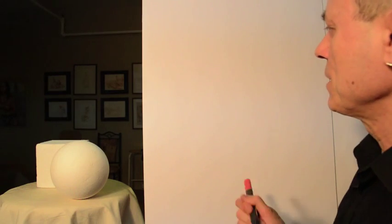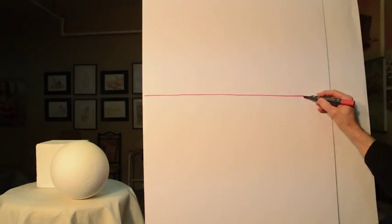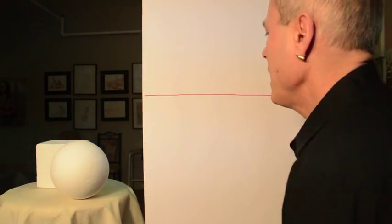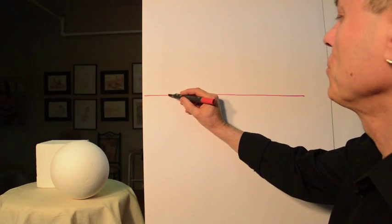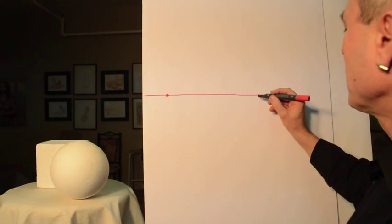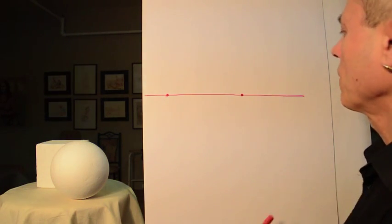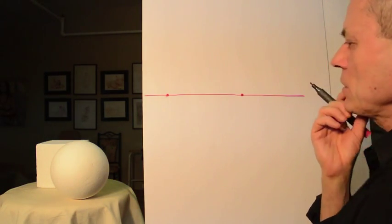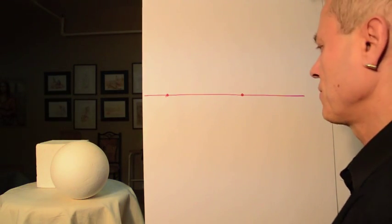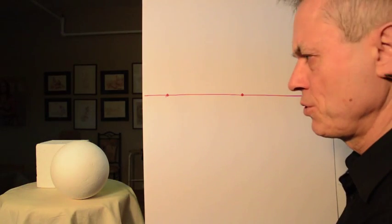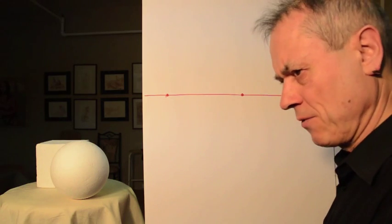As always, we start with the horizon line. We place one vanishing point here and another vanishing point over here. We'll do all this explanation using a simple form — the cube.